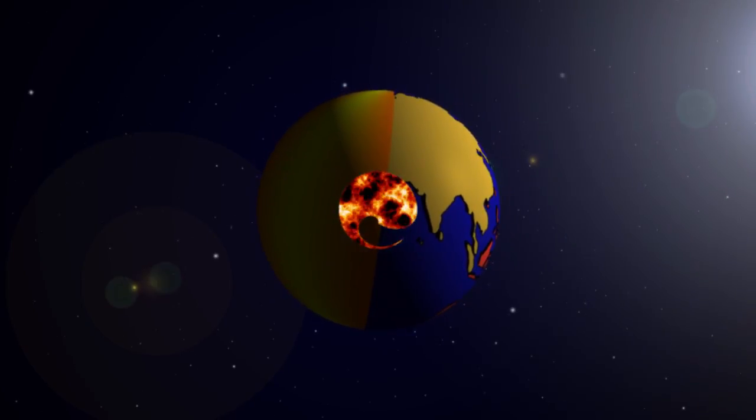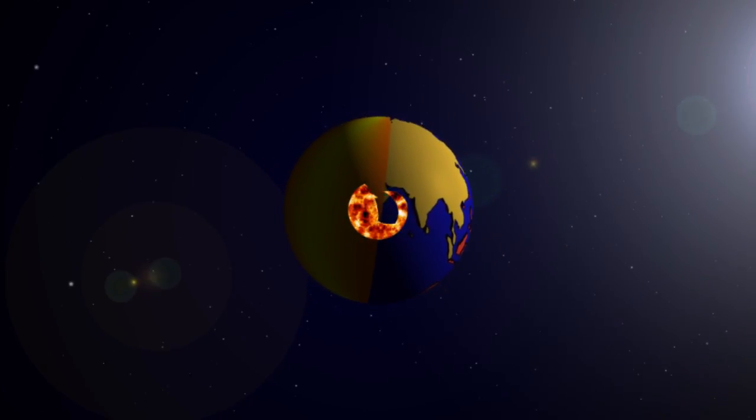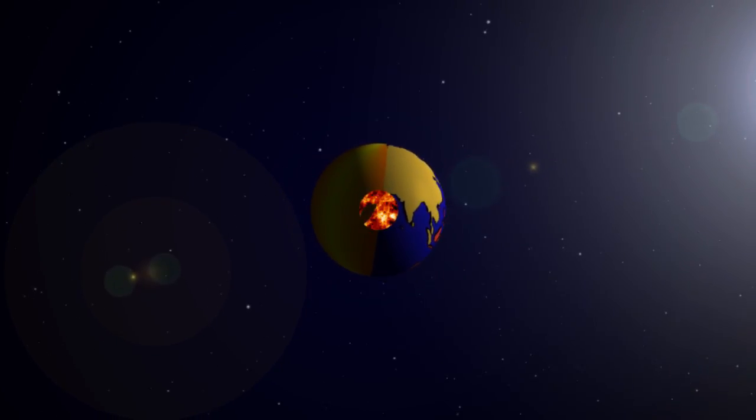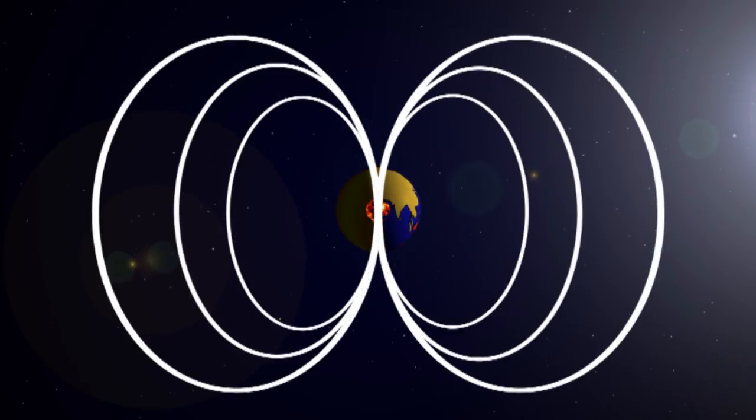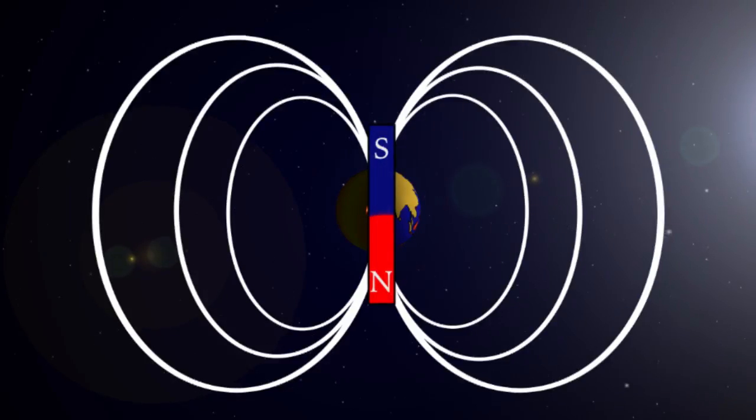Deep below the crust, below the mantle, there is a liquid outer core of mostly nickel and iron. As this electrically-conducted fluid is spun up by the spinning Earth, it generates this magnetic field that looks like a giant bar magnet inside our planet.